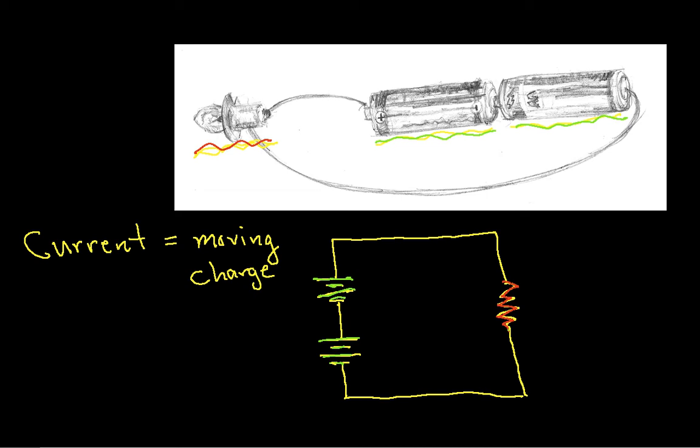And hopefully you'll recall from physics, charge is a fundamental property of certain subatomic particles like protons and electrons. So current involves protons and electrons moving through, typically, a wire or some circuit element.